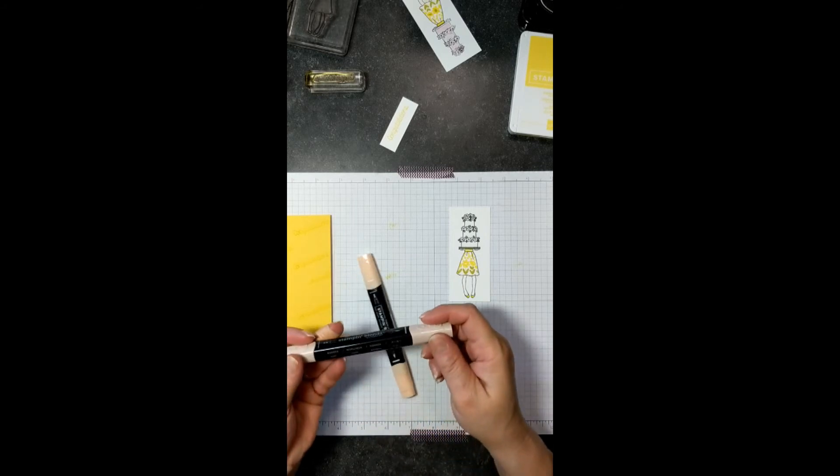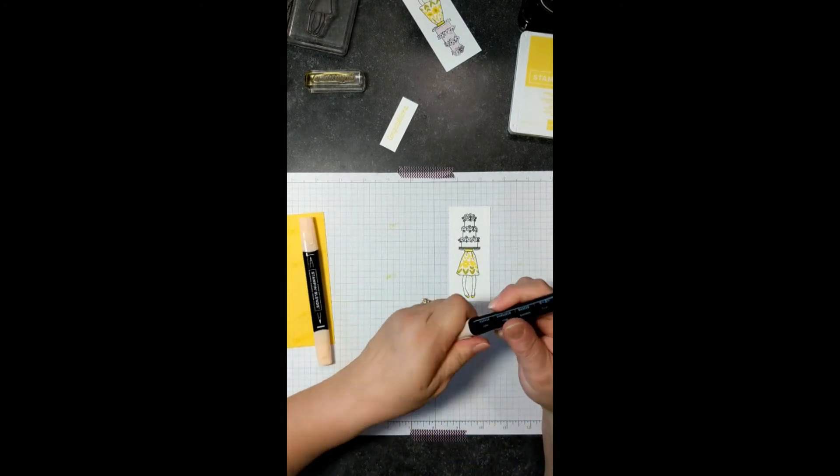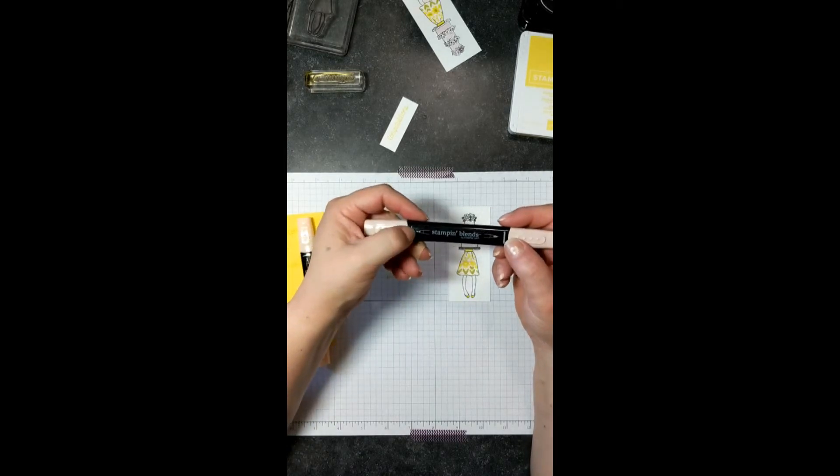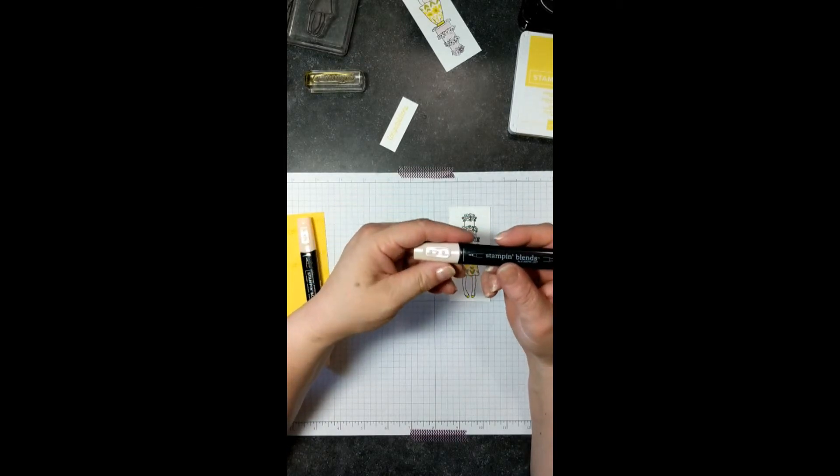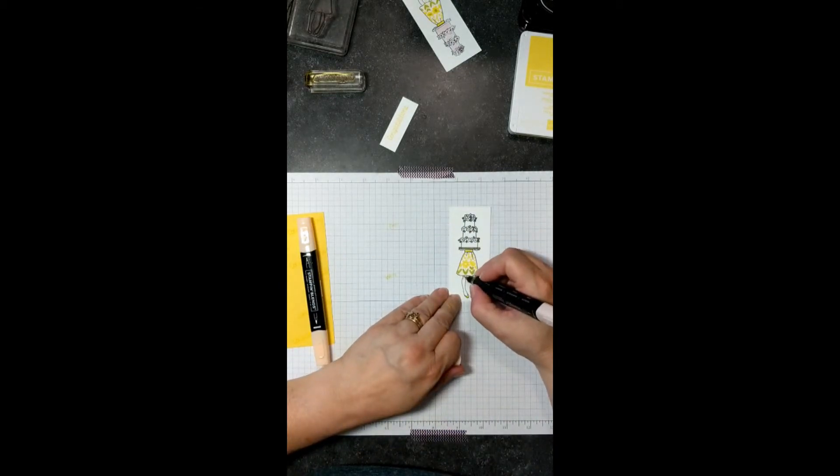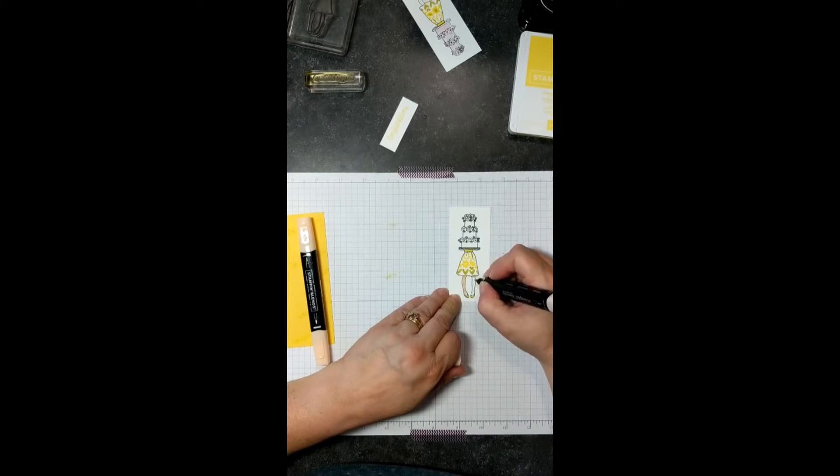And I'm going to use the ivory for the flesh on mine. And also, I want to point out on here, you have a fine tip and a brush tip. And that's always kind of handy for when you're trying to see what you're doing and not having to take the caps off both sides just to find out which side you need. So I'm going to go ahead and just come in and color her legs with the brush.